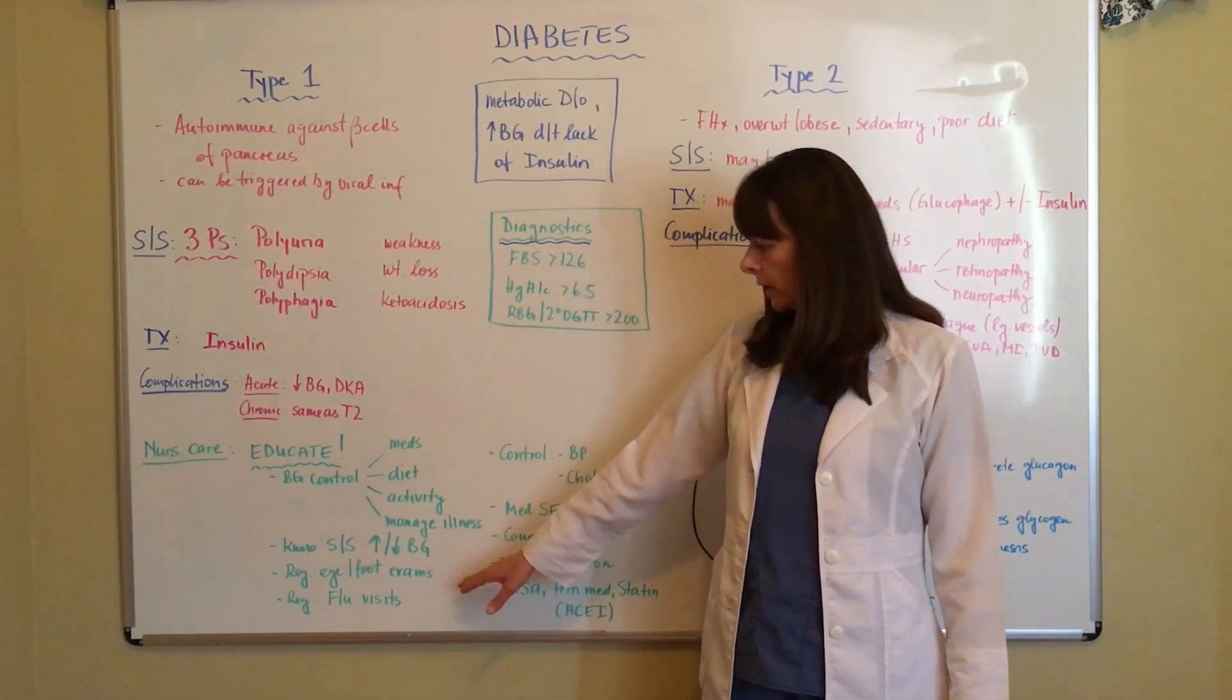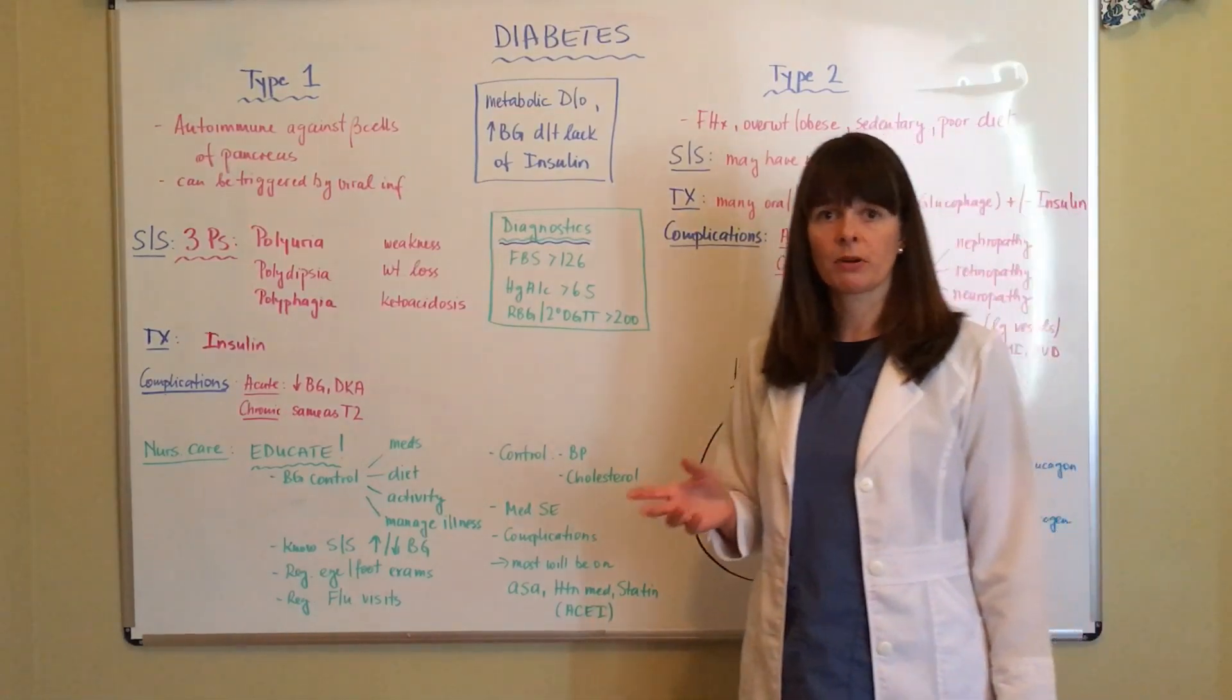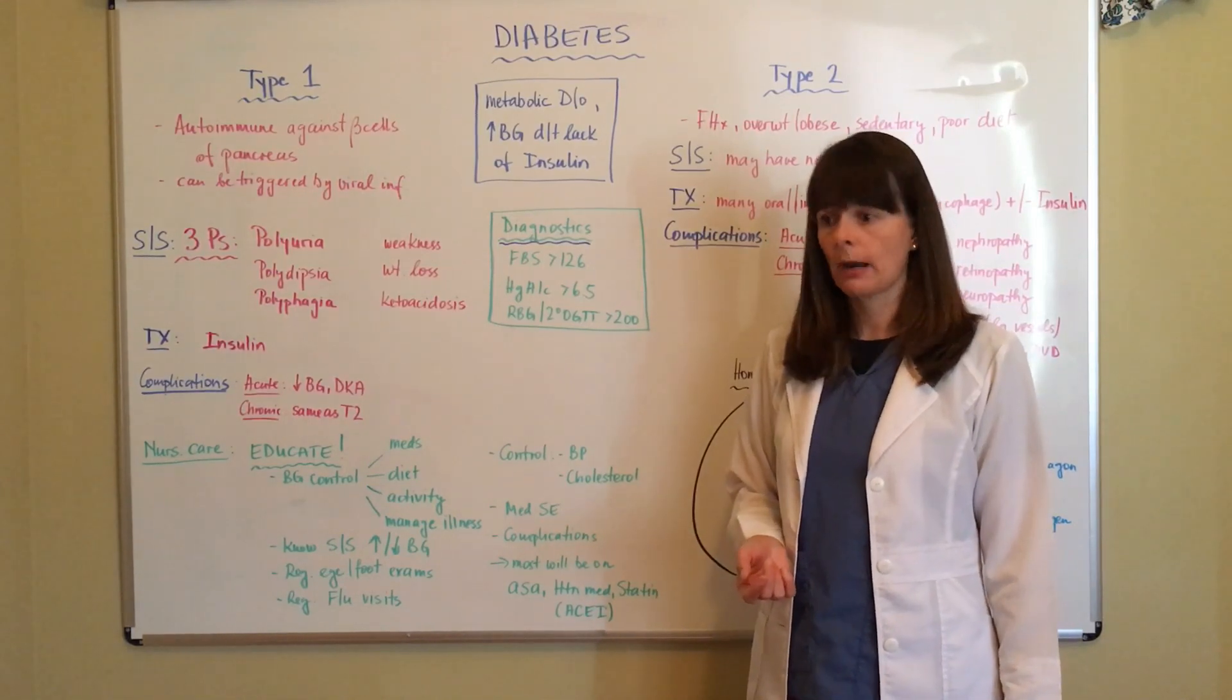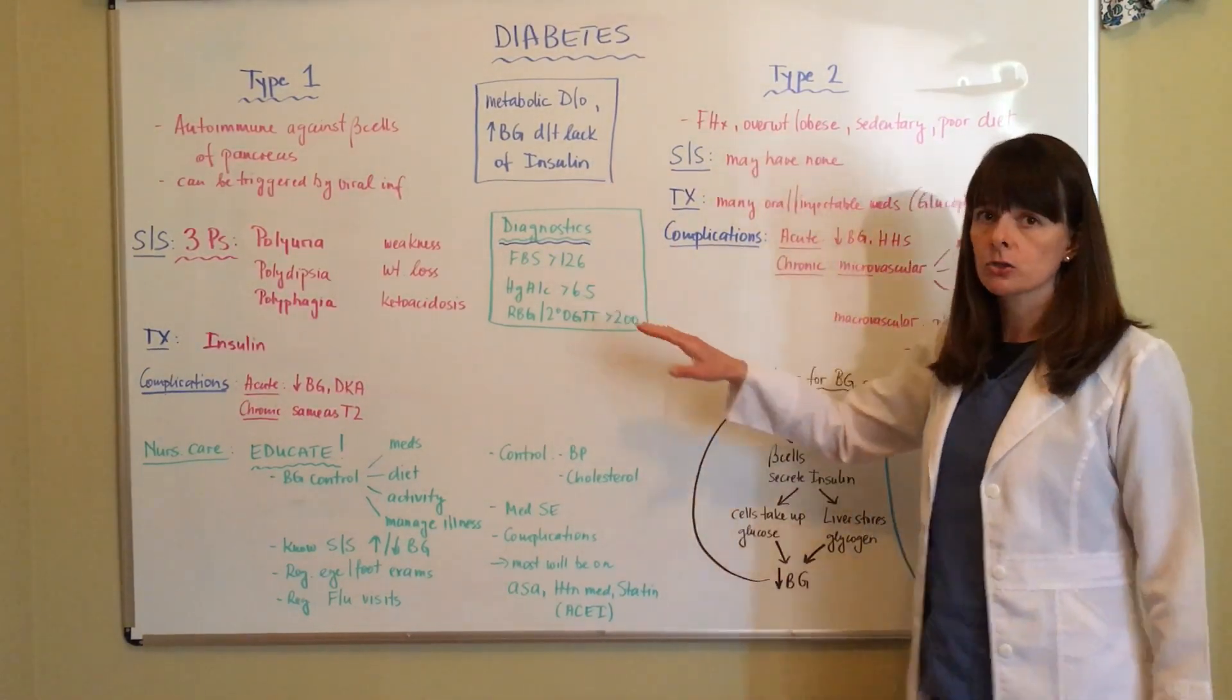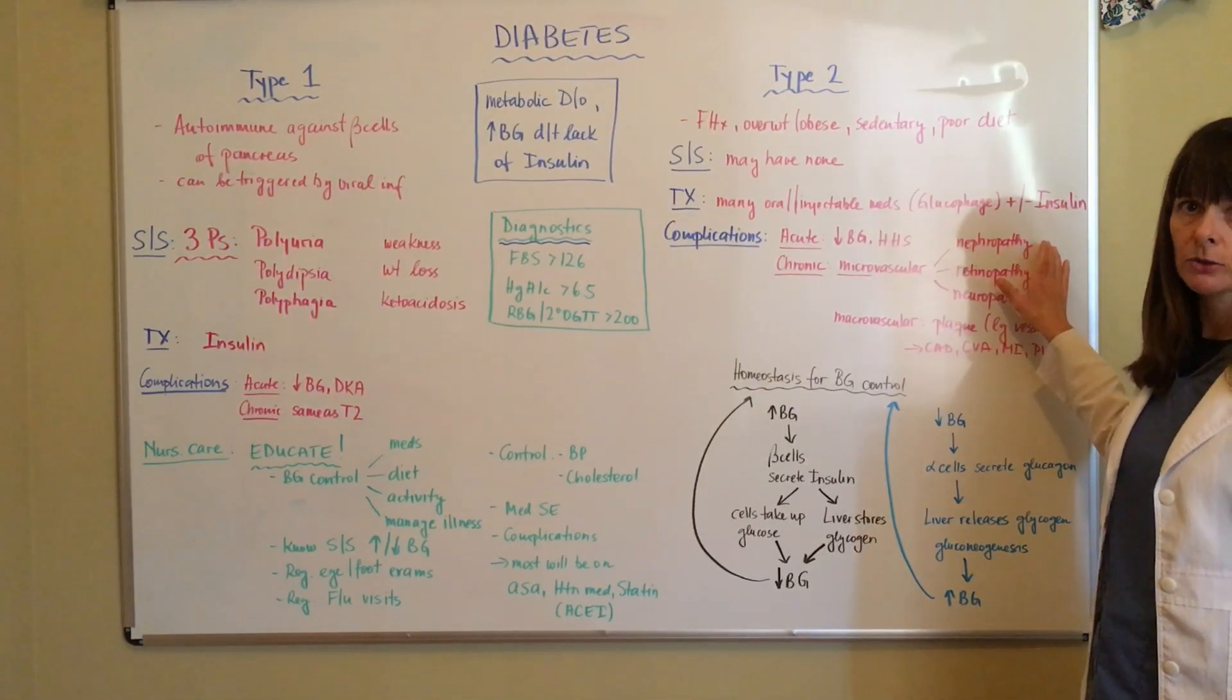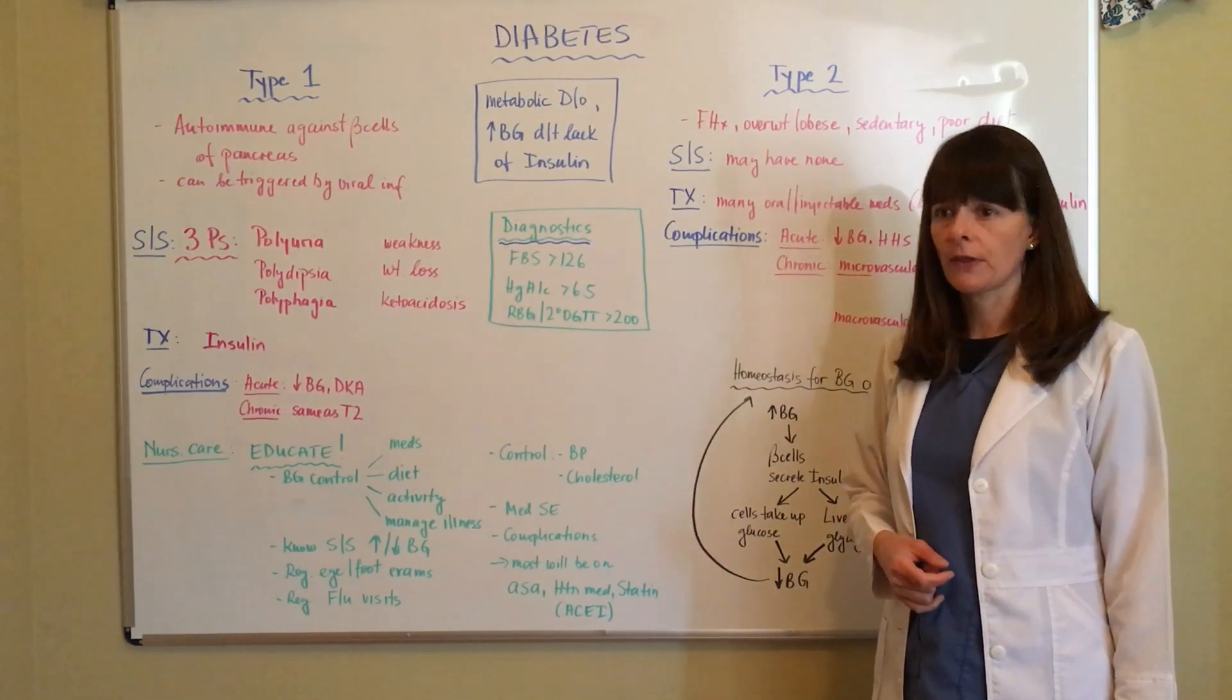They will require regular eye and foot exams to prevent these complications and make sure that measures are taken to prevent foot ulcers and eye damage. That can lead to blindness as well as regular follow-up visits, not only to check their hemoglobin A1c, but also to follow up on their kidney function, because that's one of the most detrimental complications. If the patient has complete renal failure, they will need to be placed on dialysis, and that's a major impact on their lives.